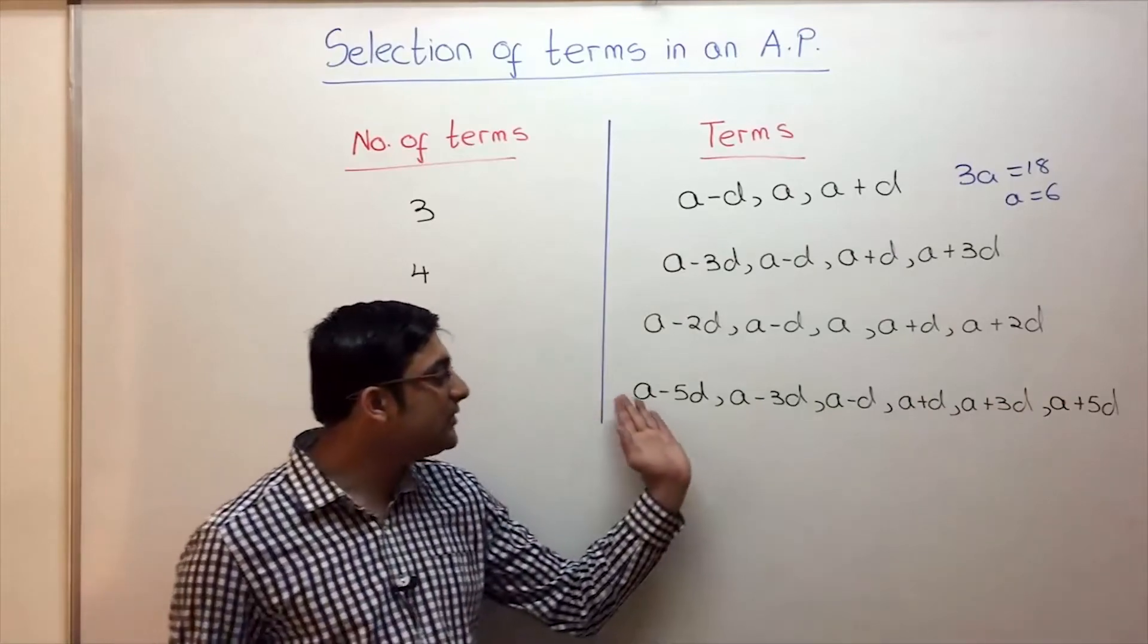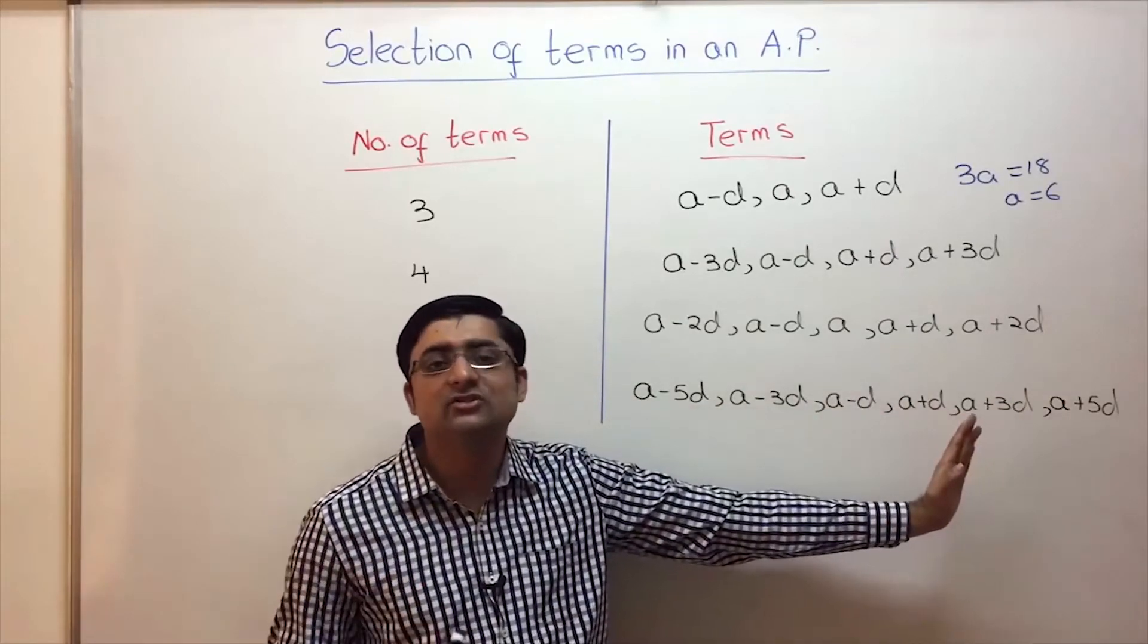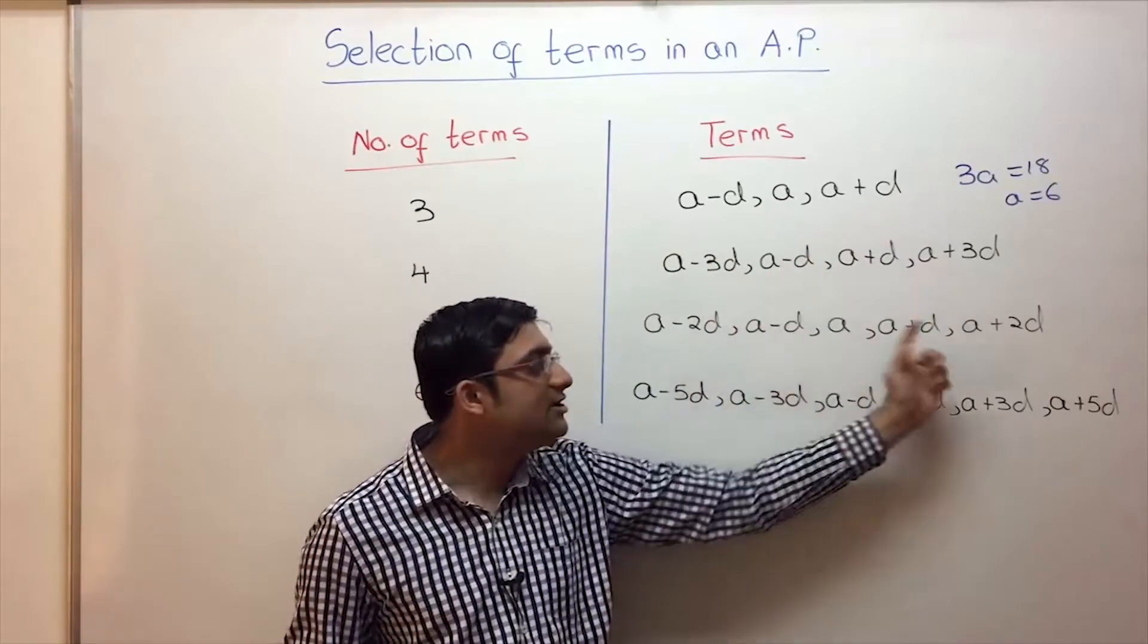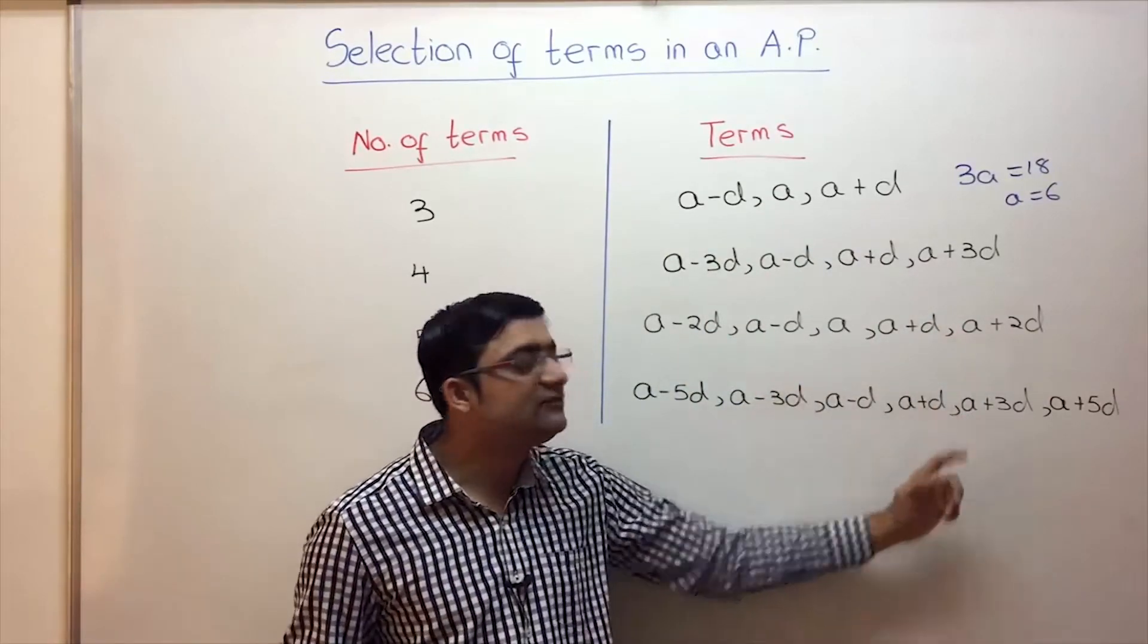So I repeat once again, the logic is when we add all these terms the D should cancel out. Addition of all these terms: 3A. Addition of all these terms: 4A. Addition of these terms: 5A. Addition of these terms: 6A.